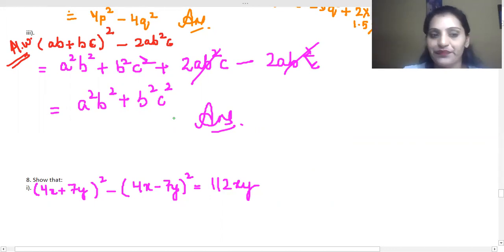Now, what is this? This is ab plus bc whole square. What is this? A plus b whole square, or x plus y whole square. So, we just opened it up. A square b square plus b square c square plus 2ab. Right? Ab into bc. What will become a b square c? So, we have a minus. We also have two things strike out. So, we have an answer. A square b square plus b square c square.